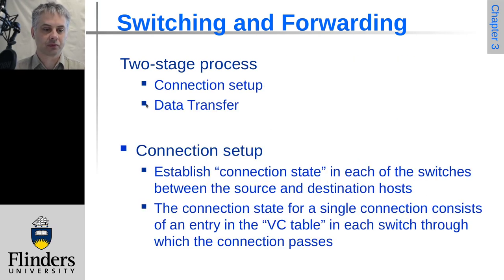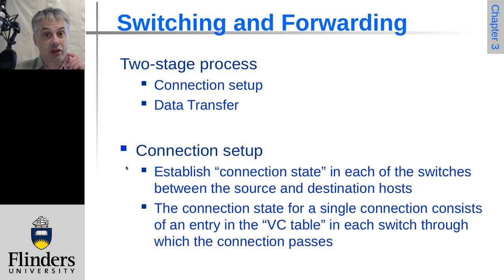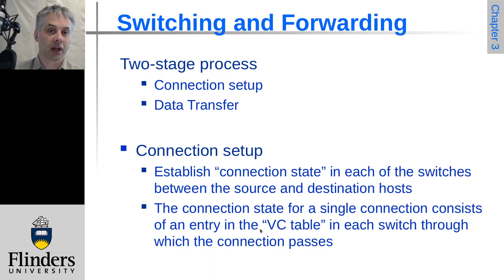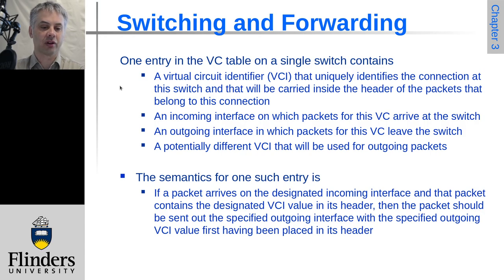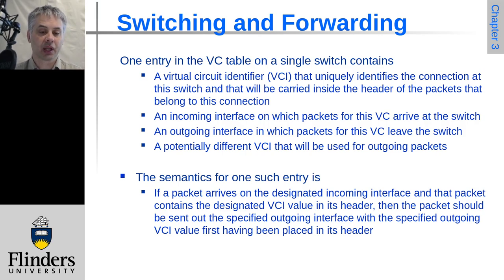There are two stages: first, establishing the connection — setting it up, working out the path, and involving each switch in the connection setup so it knows its role. Only after that, and after each switch has recorded the information in a virtual circuit table or equivalent data structure, can the data transfer actually begin. The virtual circuit identifier uniquely identifies that connection to the switch so it knows where packets need to be forwarded. This could be a tag prefixed by the first host onto the packets or frames, or it could be that the switch looks at the incoming port information and just remembers it without making an active decision.